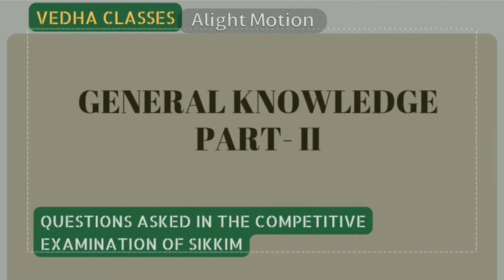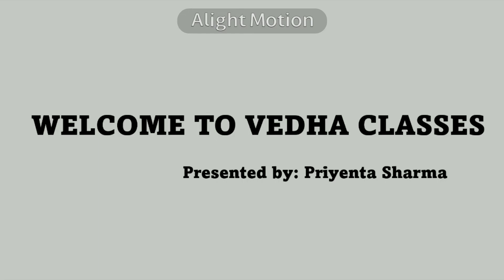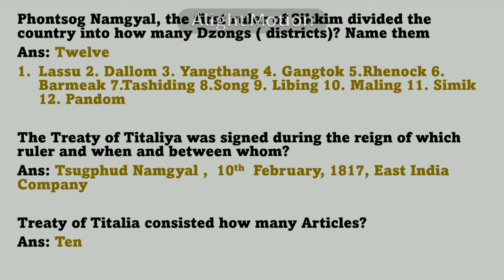Let's begin. Funsok Namgyal, the first ruler of Sikkim, divided the country into how many jongs or districts? Name them. The answer is 12. The 12 districts were: Lasu, Dalom, Yangtang, Gantok, Rinok, Bormiak, Thasiding, Song, Leving, Maling, Simic, and Pandam.